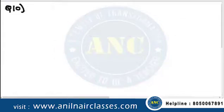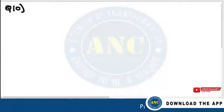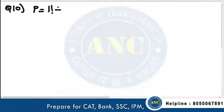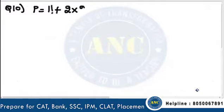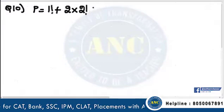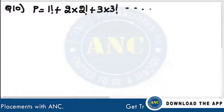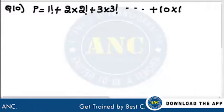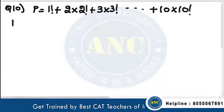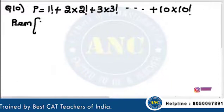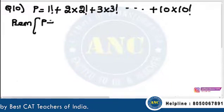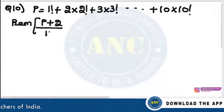Another SSE question. A CAT question: P equals 1 factorial plus 2 into 2 factorial plus 3 into 3 factorial, and so on up to 10 into 10 factorial. The question is: find the remainder when P plus 2 is divided by 11 factorial.